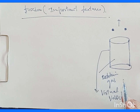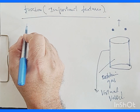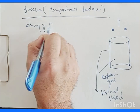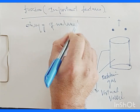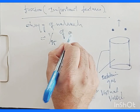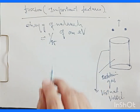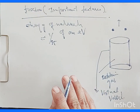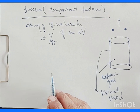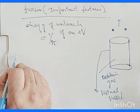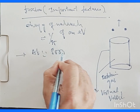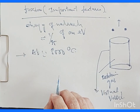At ordinary temperature and normal pressure, the energy of the molecules is nearly 1/25th of an electron volt on average. Under these circumstances, certainly no reaction is going to take place.